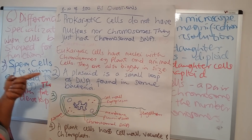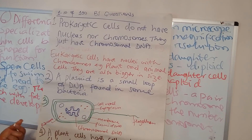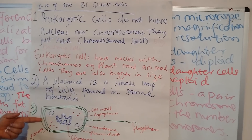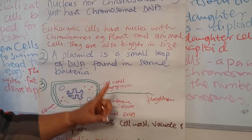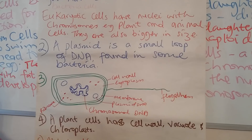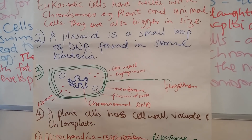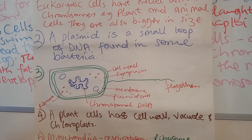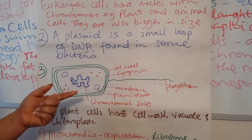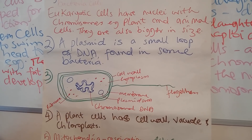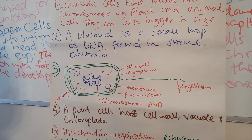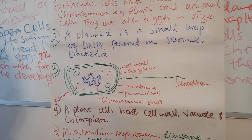Now, what's a plasmid? A plasmid is a small loop of DNA which is found in some bacteria. Here is the diagram of a bacterium. It has a flagellum, a cell wall, cytoplasm, plasmid DNA, a cell membrane, chromosomal DNA, and ribosomes. In terms of a plant cell, it has a cell wall like a plant cell, and like an animal cell it has a flagellum. So there are similarities, in case that question pops up on your paper.